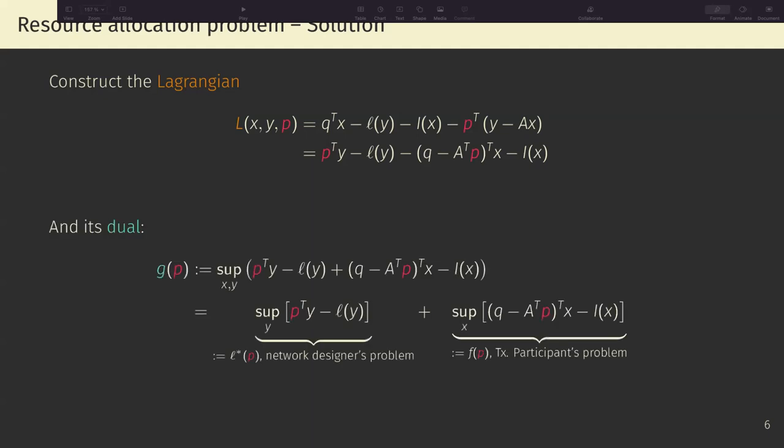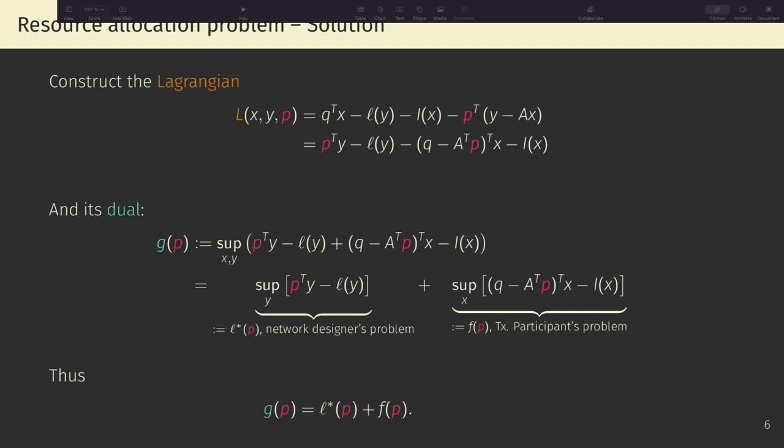And having defined the Lagrangian, we can also define what's called its dual, which is this function G of P, that is defined as the supremum over X and Y of the Lagrangian, which if we massage it a little bit, we can get that this equation is equal to this supremum over Y of P transpose Y minus L of Y, plus the supremum over X of this other term. The first term that I'm calling L star is the network designer's problem. We want to find the expenditure that maximizes this amount, price times expenditure minus the network unhappiness, plus this other term, which is the transaction participant's problem, meaning what are the messages that I want to include from that set of admissible messages, such that I maximize the joint user-miner utility.